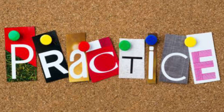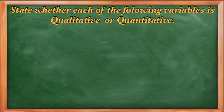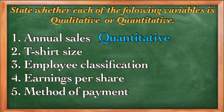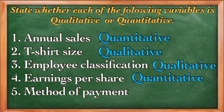Now let us try to answer this one. State whether each of the following variables is qualitative or quantitative. Number one: annual sales — it is quantitative. T-shirt size, like small, medium, or large — it is qualitative. Employee description or classification, like permanent or part-time — it is qualitative. Earnings per share — it is quantitative. Methods of payment, like cash, check, or credit card — it is qualitative.